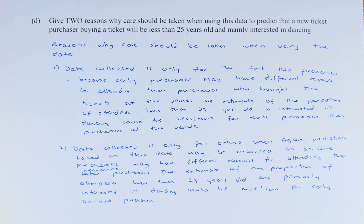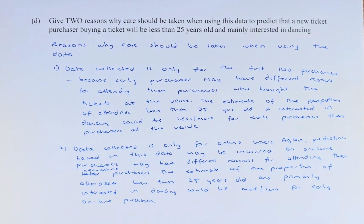Let's solve this problem. There are 2 main reasons. First, the data is collected only for the first 1,000 purchasers. Because early purchasers — those who come early — may have different reasons for attending the concert or show than purchasers who bought the ticket at the venue. The estimate for the proportion of attendees less than 25 years old and also interested in dancing could be more or less for early purchasers than purchasers at the venue. So that is one valid point.